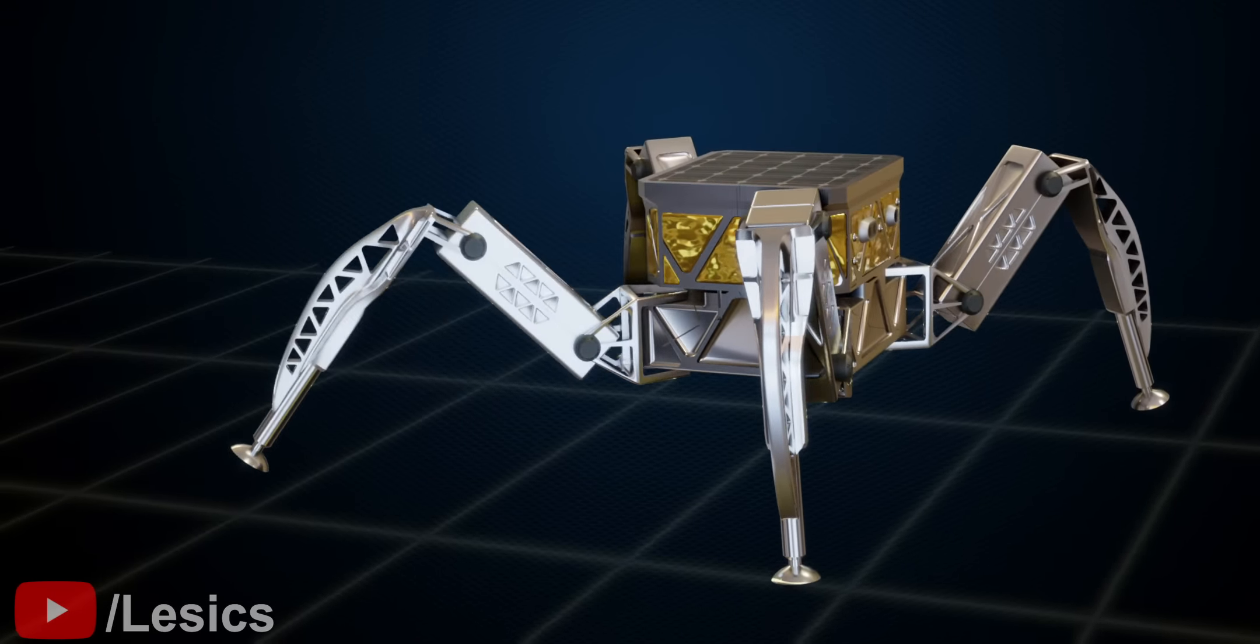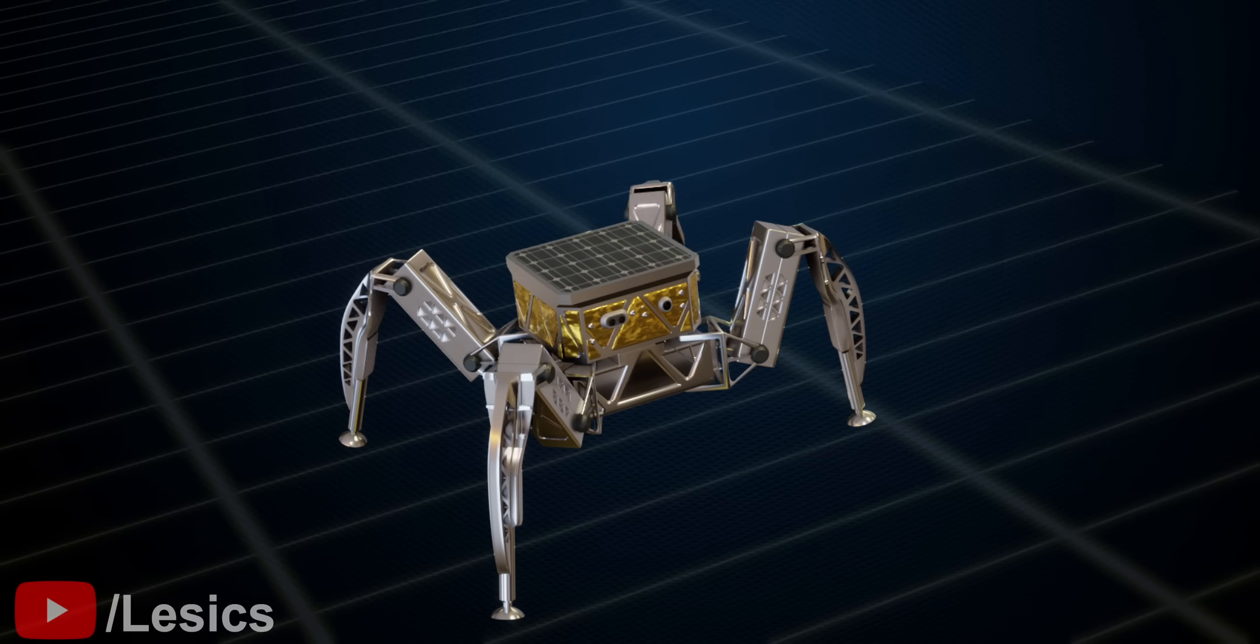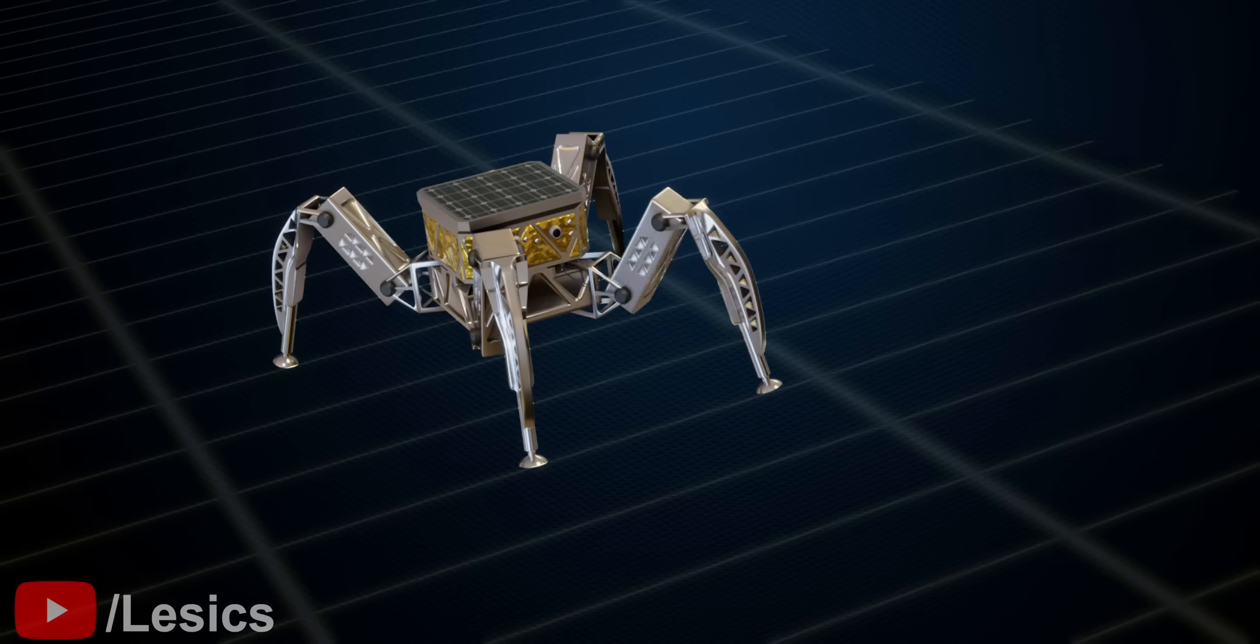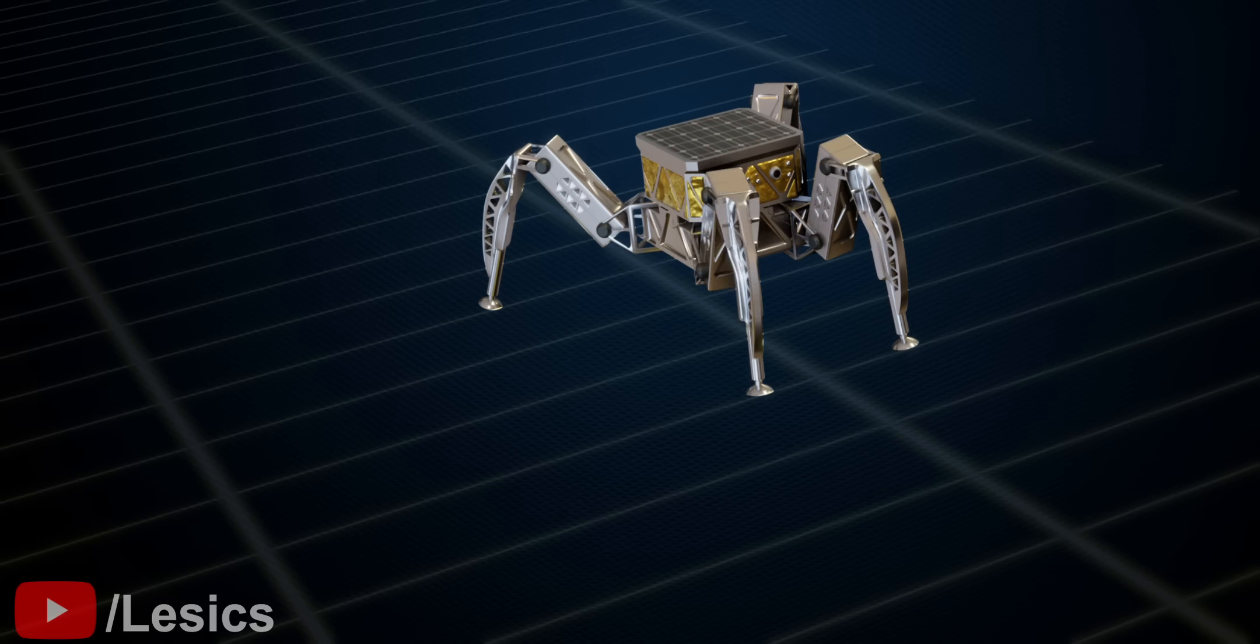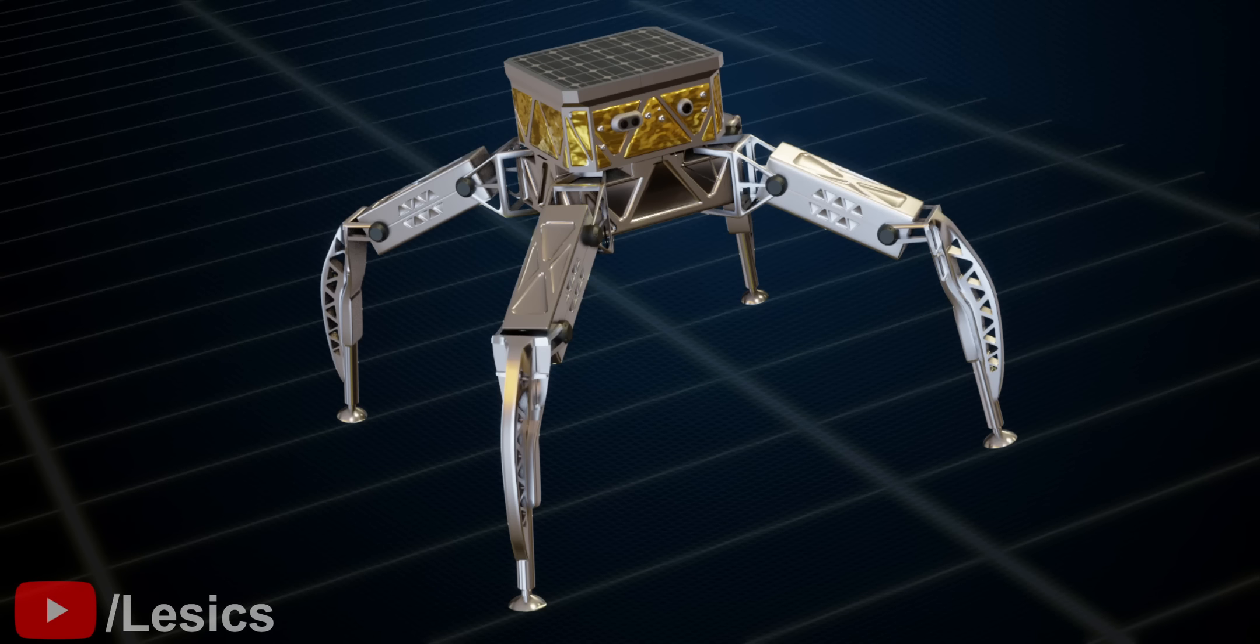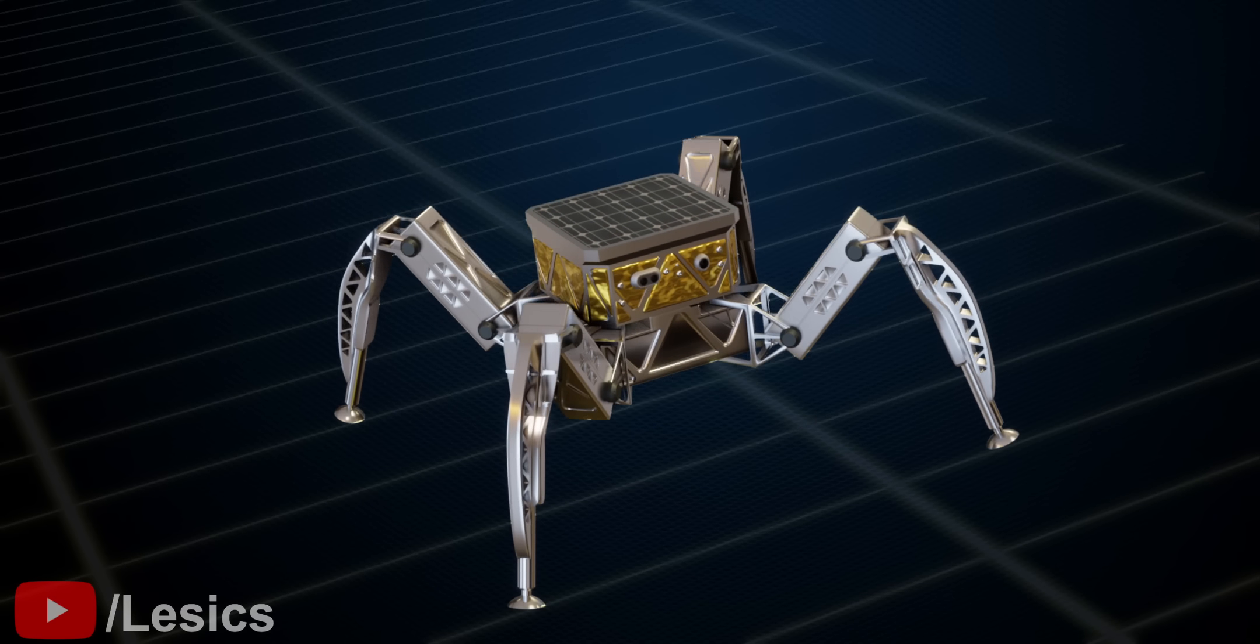Besides moving forward and taking turns, the rover can also move backwards. It can also move sideways like a crab. Also, it can raise and lower as well as tilt its body.